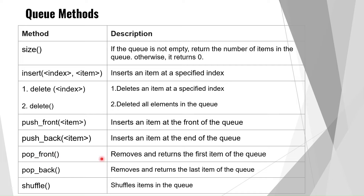The pop_front method removes and returns the first item of the queue — it removes the element at the zeroth index. Pop_back is similar: it removes and returns the last item of the queue. The shuffle method shuffles the items in the queue, meaning the order of elements will be randomized.